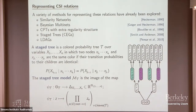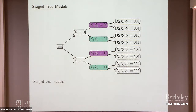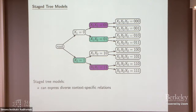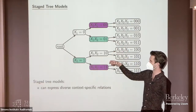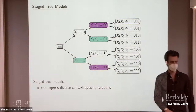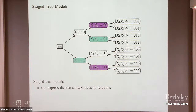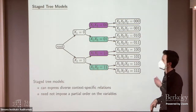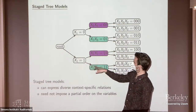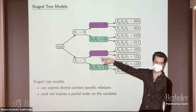These stage tree models, while including families of DAGs, can do much more diverse context-specific things. For instance, if we don't color the tree in a nice symmetric way but do something different, we can encode things like the probability of x3 given x1, x2 is (0,1) is the same as the probability of x2 given x1 is 1. We can also switch the partial order imposed on our variables in different contexts — unlike a DAG model, there's no need to restrict to a certain partial order. So in the context x1 is 1, maybe the next variable is x2, but when x1 is 0, the next variable is x3.